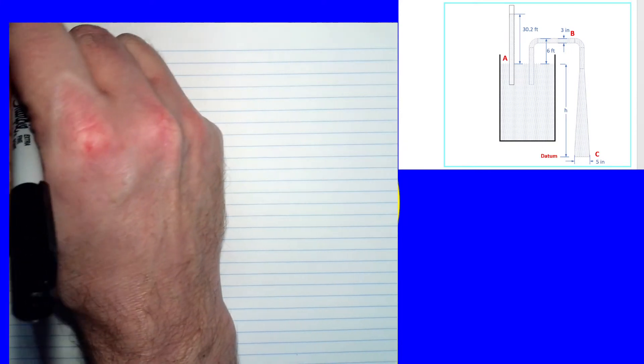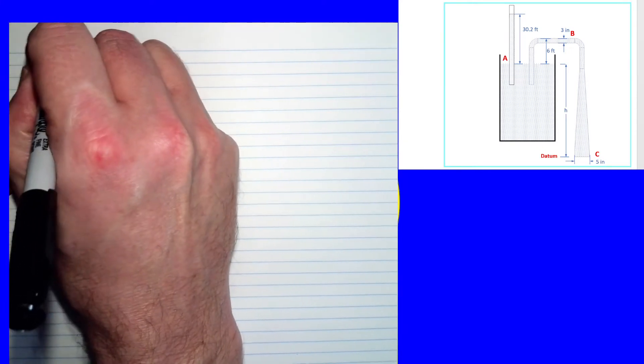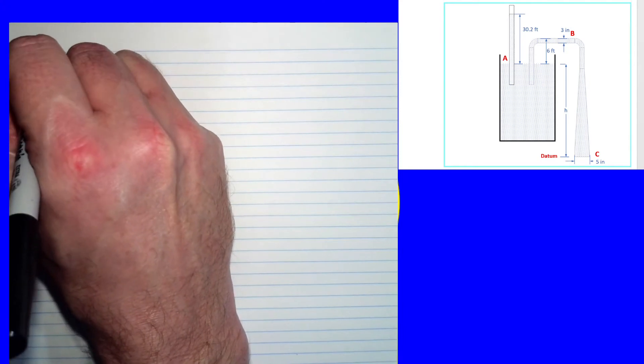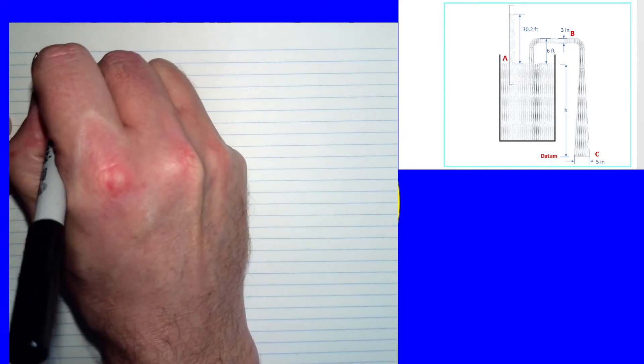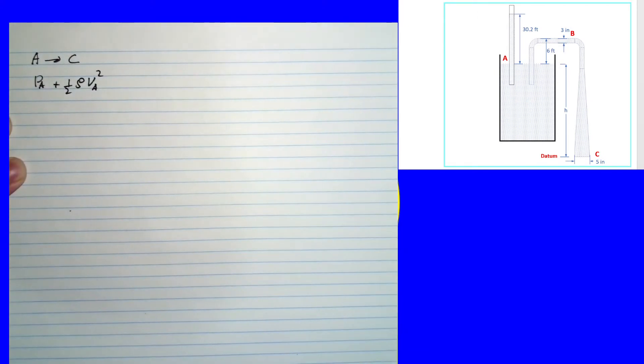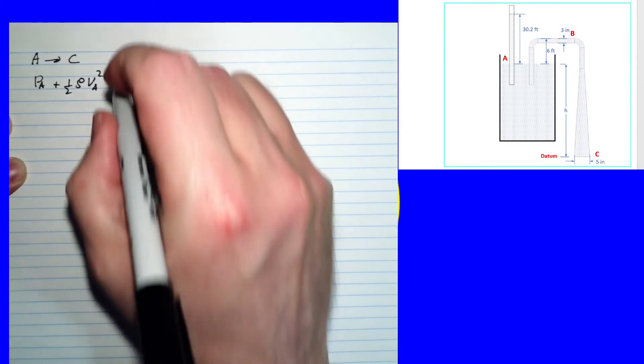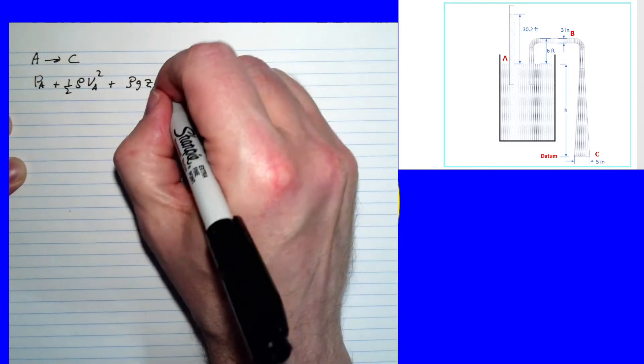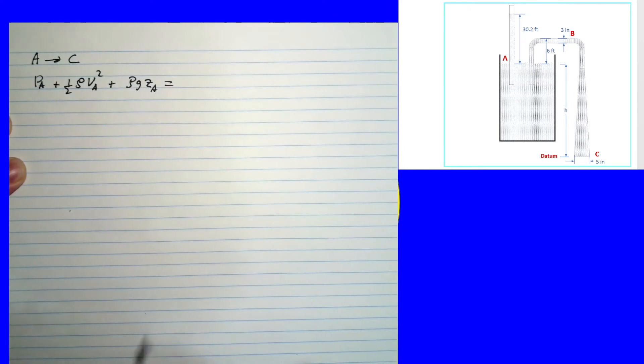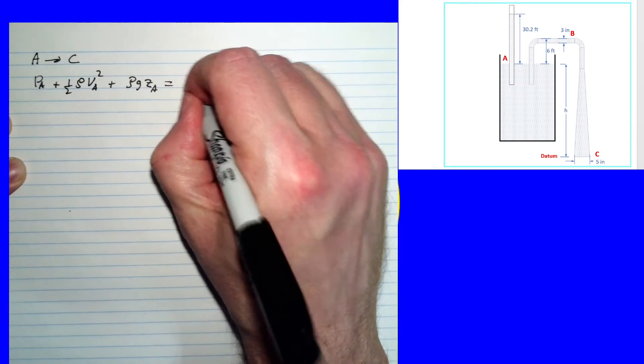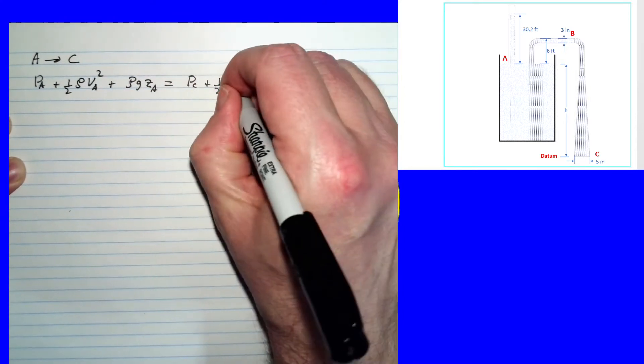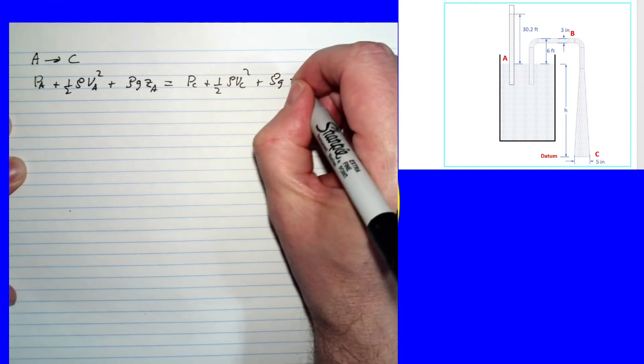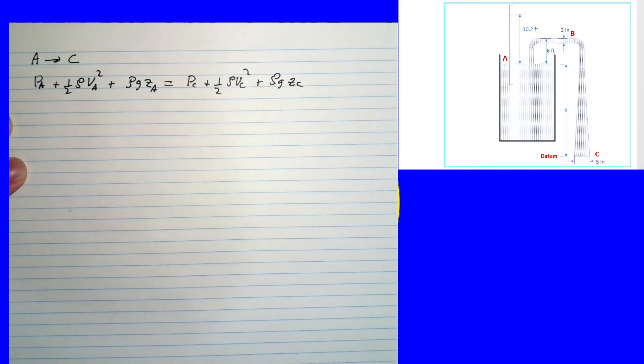First, I'm going to start off with applying Bernoulli's equation from point A to point C. So Bernoulli's equation consists of a pressure term, the dynamic pressure, plus the elevation term. So that is the mechanical energy at A, and since there are no losses, that will be equal to the mechanical energy at C, although it will come in different forms. So there we have Bernoulli's equation from A to C, so now we can simplify.